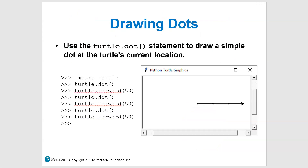Drawing a dot is really simple — just turtle.dot() and it will put a dot at the current position. You can combine this with penup and pendown to create a connected dot look. Draw a dot, penup, move forward, pendown, draw another dot, and repeat the pattern. You get a nice dashed dot effect, and we've seen some really cool connect-the-dot drawings done this way.